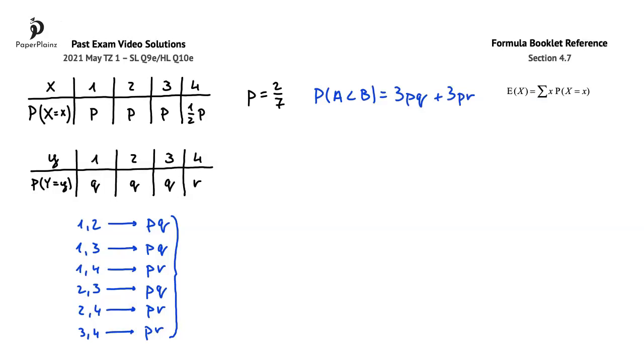In the next step, we'll use the result from question part A, where we found that P is 2 over 7. Let's substitute 2 over 7 for P into the expression 3PQ plus 3PR. 3 times 2 over 7 is 6 over 7, so we get 6 over 7Q plus 6 over 7R. Based on the information given in question part E, this probability is 1 half.